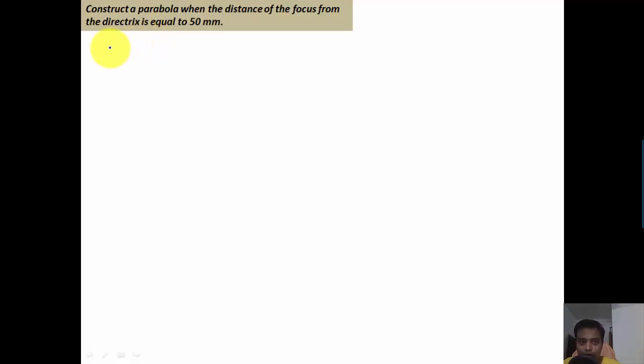The distance of focus from the directrix: let's say we have a point C on the directrix line itself. This vertical line is the directrix, and from this directrix the distance of the focus is 50 millimeters. So CF is equal to 50 millimeters. First, let me locate F somewhere here, and this point lies at a distance of 50 millimeters from point C.